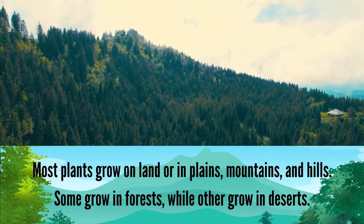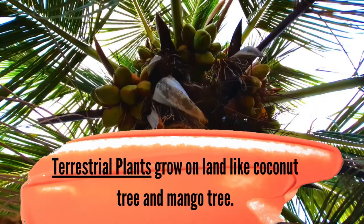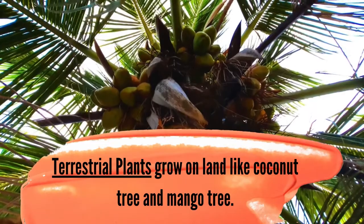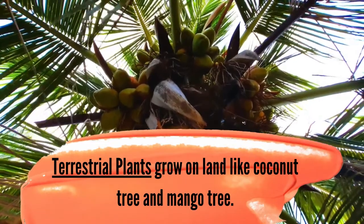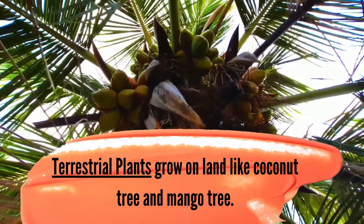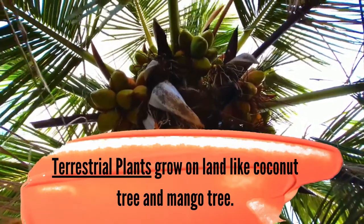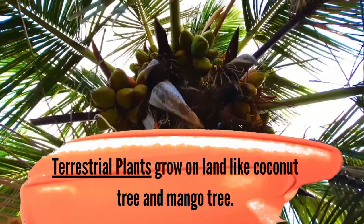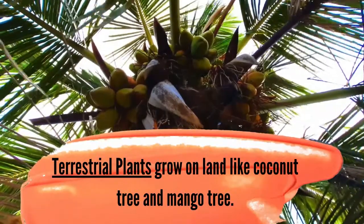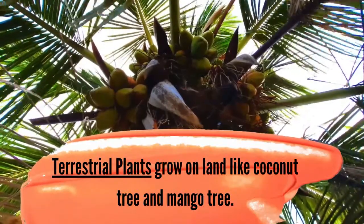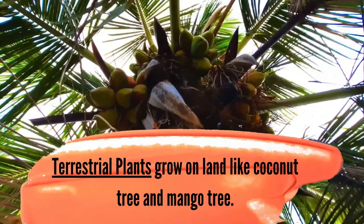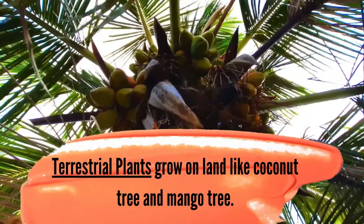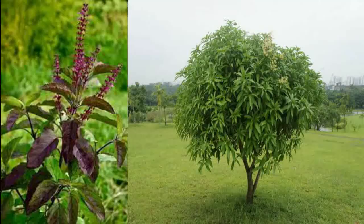Now you know where most of the plants live. Let us classify the plants according to where they grow. First, terrestrial plants. Terrestrial plants grow on land, like coconut and mango tree.